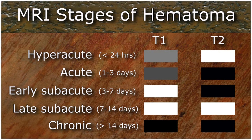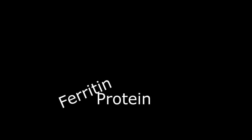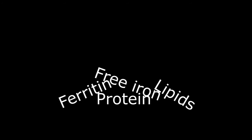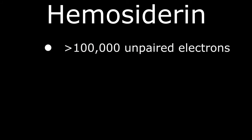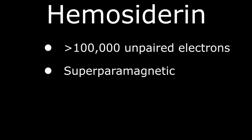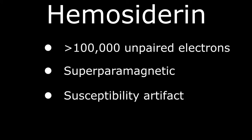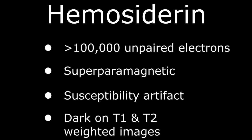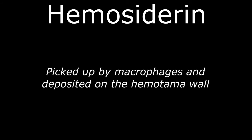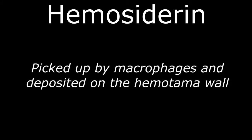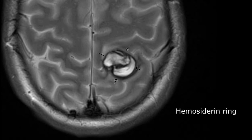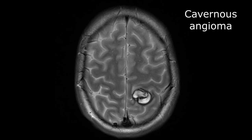Making the chronic clot dark on both T1 and T2-weighted images. In addition, an amorphous collection of fragmented proteins, ferritin storage units, free iron, and lipids accumulate in the clot matrix, producing hemosiderin. With more than 100,000 free electrons, hemosiderin is also considered superparamagnetic, further disrupting the local NMR signal and making the chronic clot dark on both T1 and T2-weighted images. This hemosiderin is then picked up by macrophages and the reticuloendothelial system and deposited on the hematoma wall, giving the familiar hemosiderin ring seen in chronic hemorrhage often associated with a cavernous angioma.